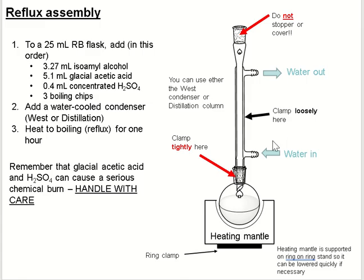For the reflux assembly, we use a heating mantle. Add 2.7 mL isoamyl alcohol (2.64 grams), excess glacial acetic acid, concentrated sulfuric acid, and some boiling chips. Add water-cooled condenser and heat to boiling temperature for at least 60 minutes, leaving the top open so that water can be removed. The heating mantle is supported on a ring clamp on a ring stand so it can be lowered quickly if necessary. Note that glacial acetic acid and sulfuric acid are very dangerous — handle with care.